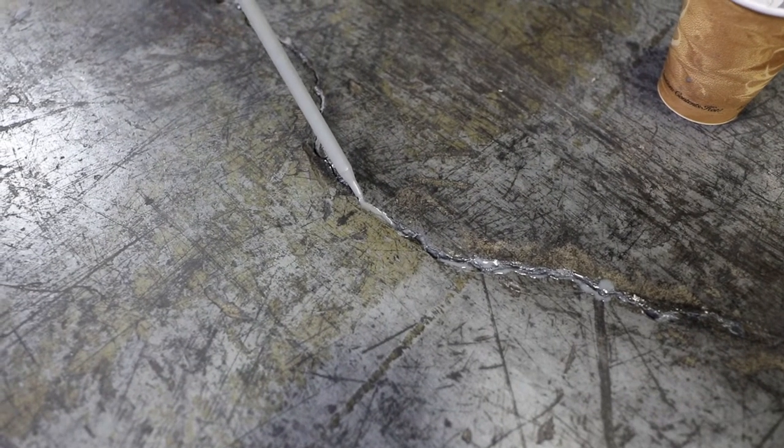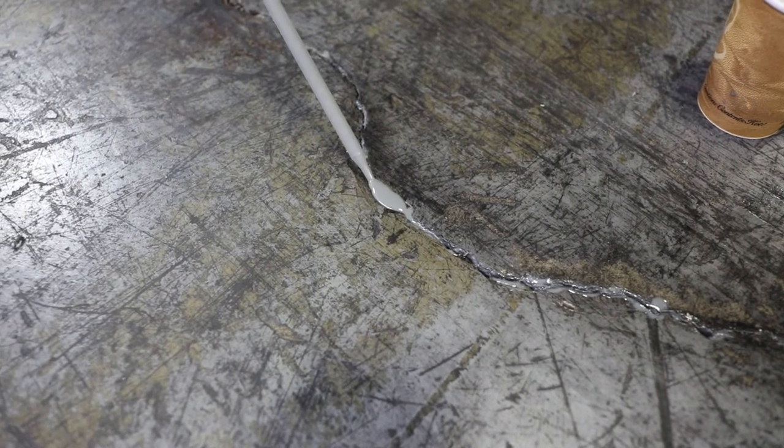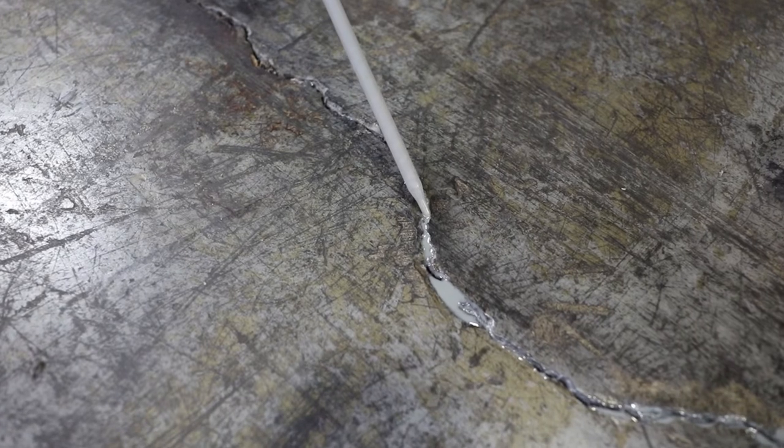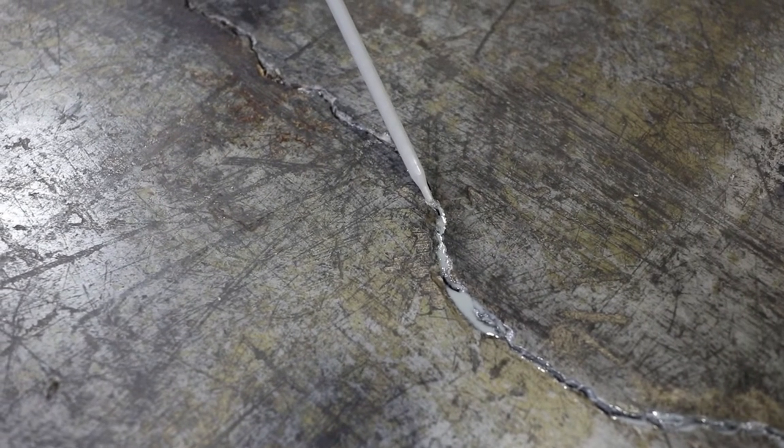Lay in your first layer of 555 approximately half-inch deep. Continue along the length of the crack. Work from one end of the crack to the other, adding one layer at a time.